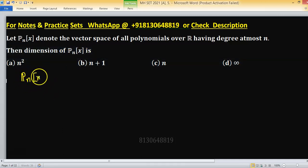So dimension of P_n(x) will be n plus 1, option B is right, but how it is coming?